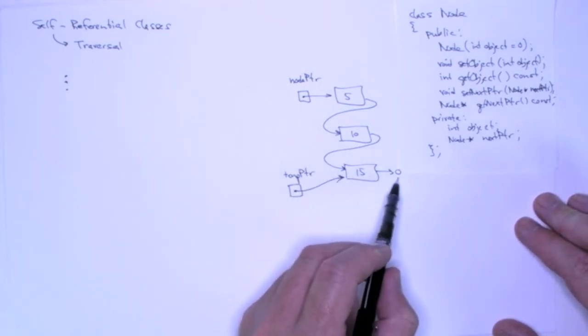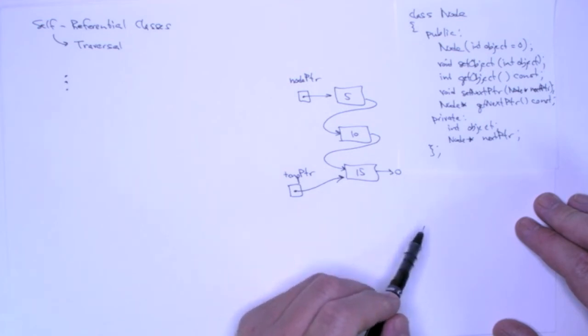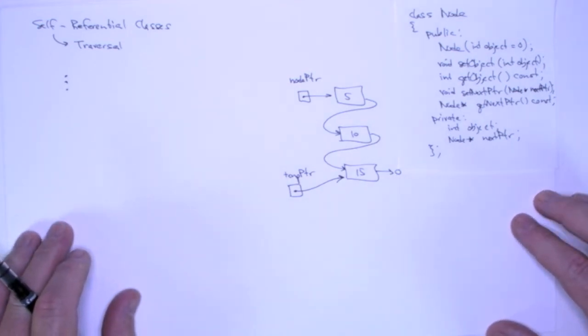What I'm going to do is I know that I'm at the end of the list when I reach a next pointer that's null. And so I'm going to use that as the termination condition for my loop.